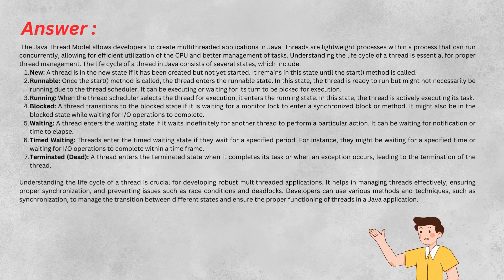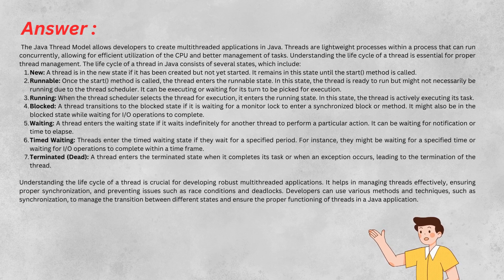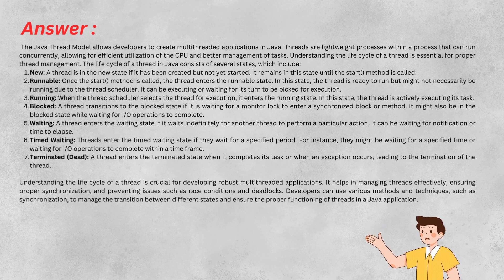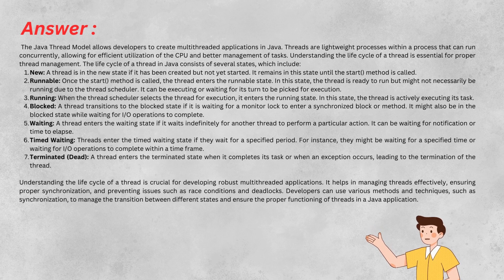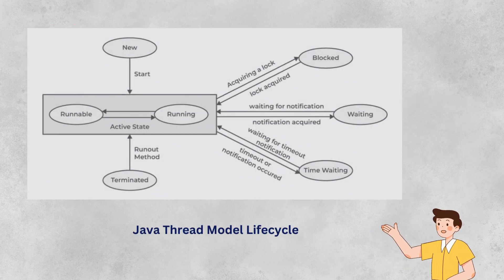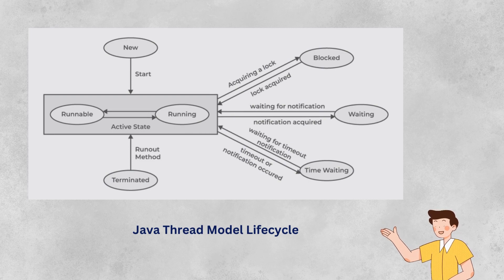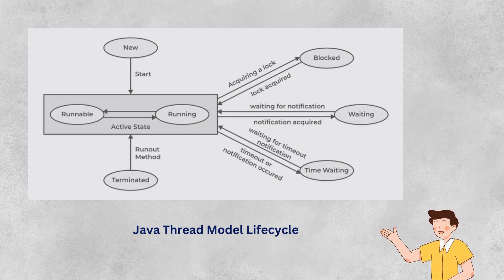Waiting — indefinitely waiting for another thread's action; Timed Waiting — waiting for a specific time period; Terminated — dead, completes its task or terminates due to an exception. Understanding these states is crucial for effective thread management, synchronization, and avoiding issues like race conditions and deadlocks in Java applications.